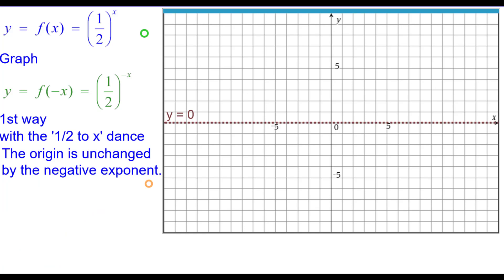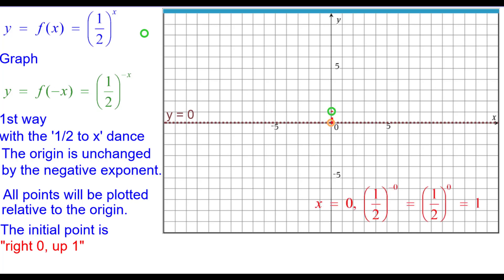The origin also is unchanged by the negative exponent. And all points will be plotted relative to the origin. Our initial point is right 0 up 1. And the reason for that is when x is 0, the opposite of 0 is 0. And 1 half raised to the 0 is 1.